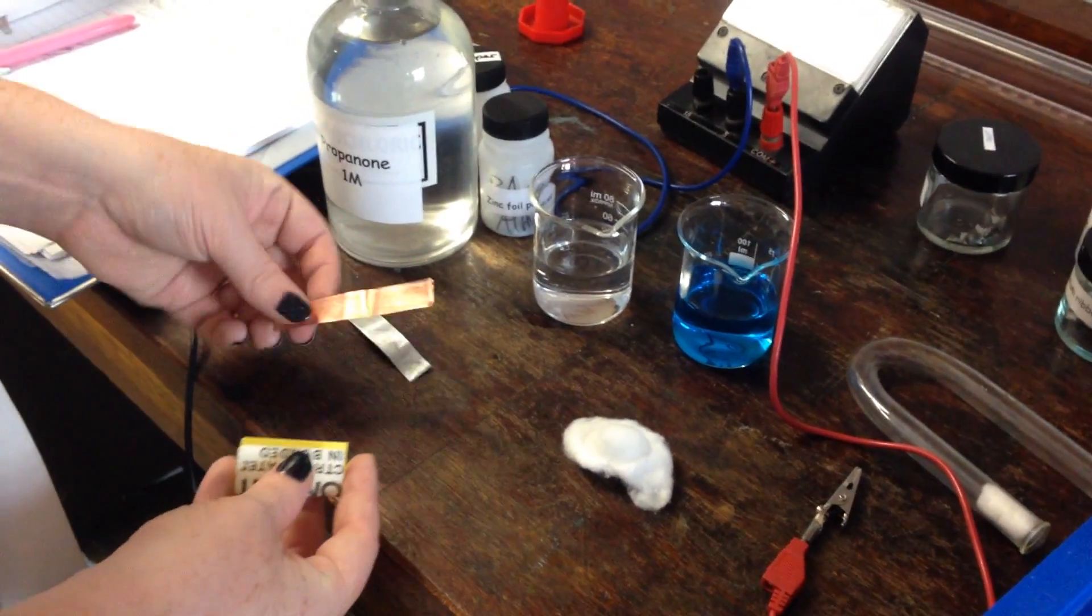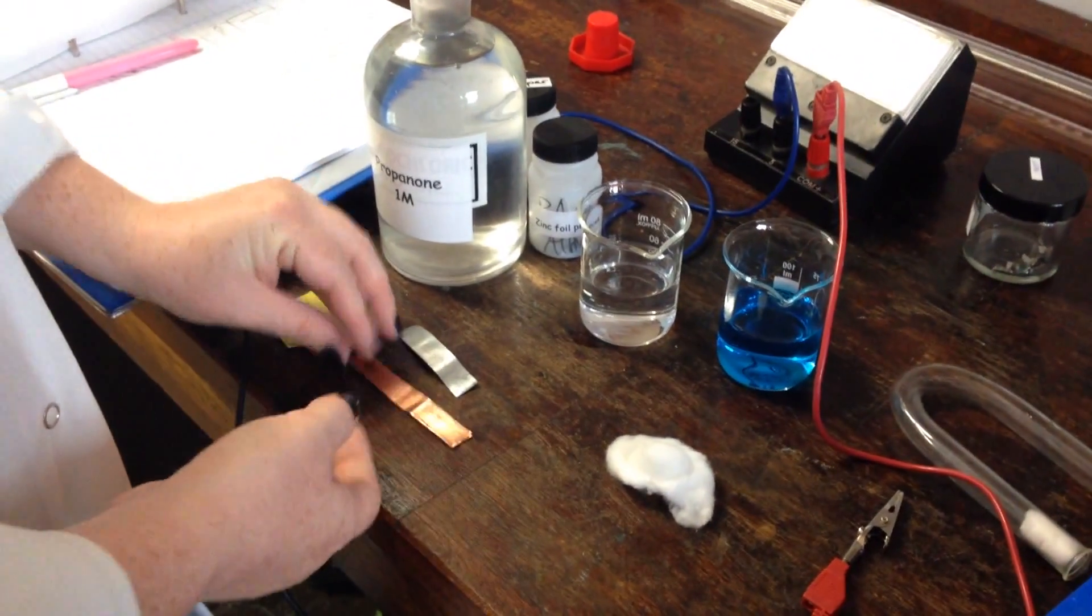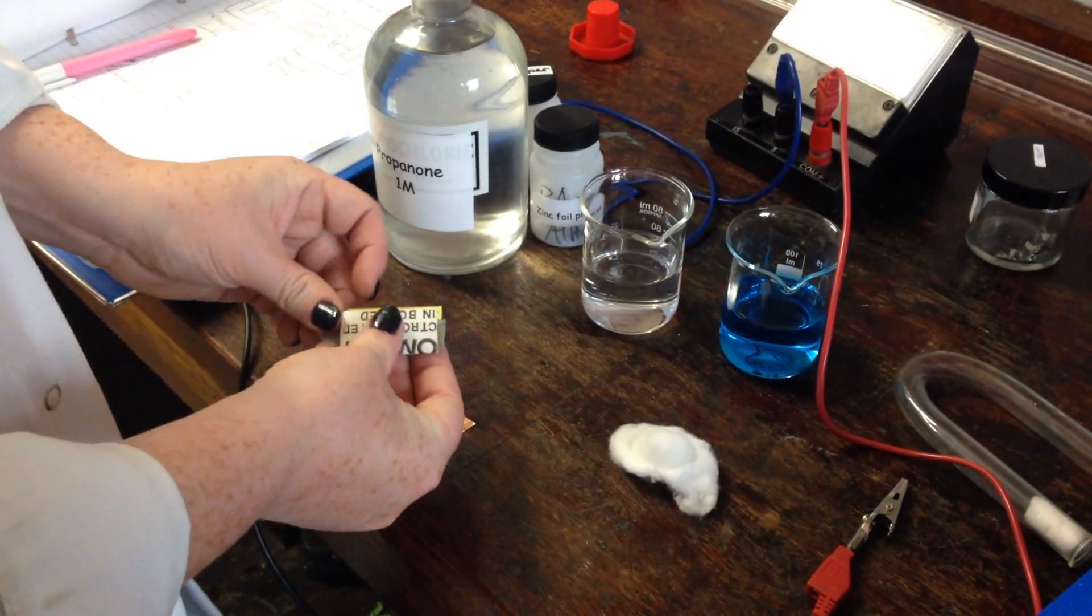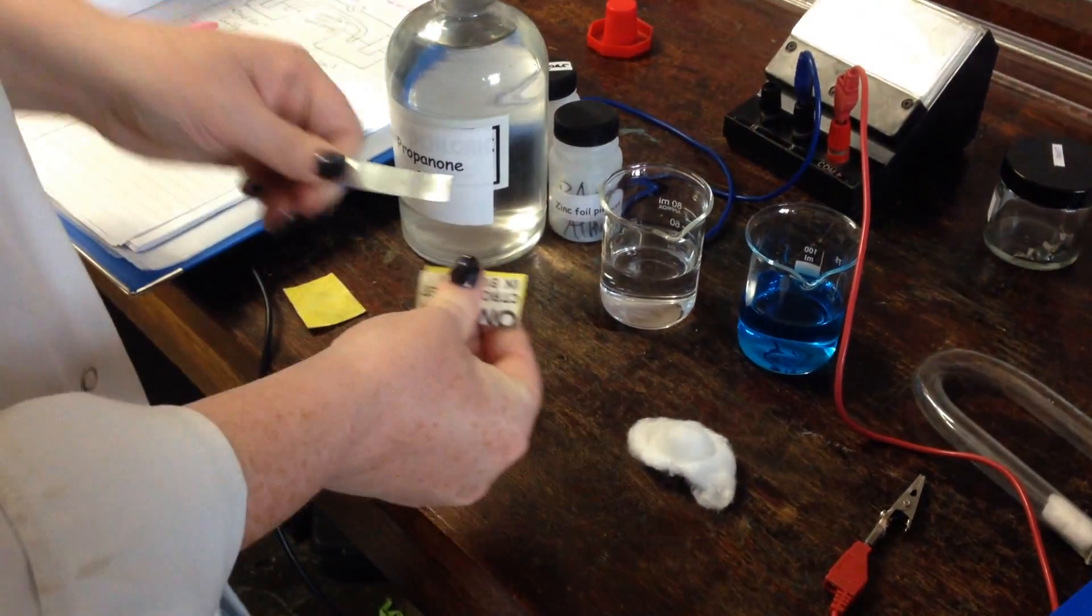So I'm about to set up an electrolysis experiment here. I've got my copper electrode and my zinc electrode, but some of these are a little bit dirty and a bit tarnished.